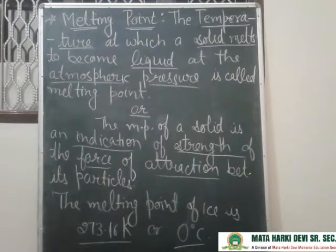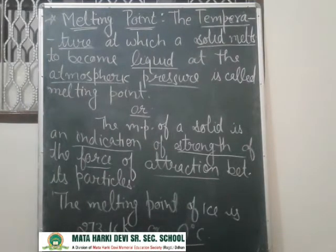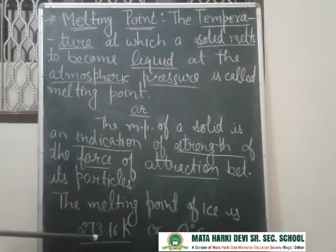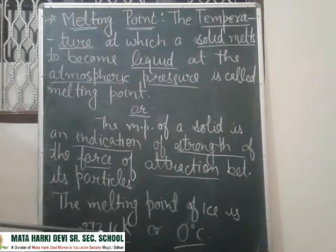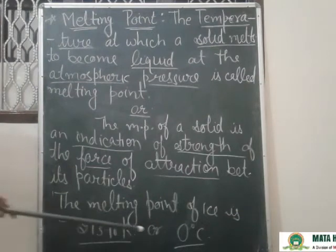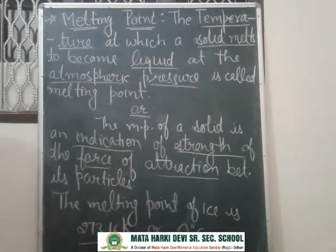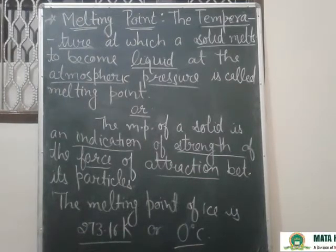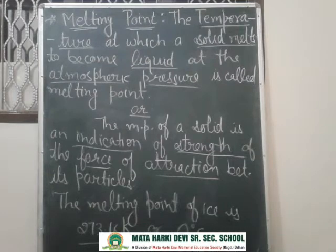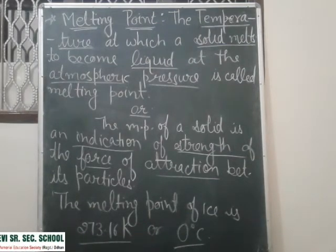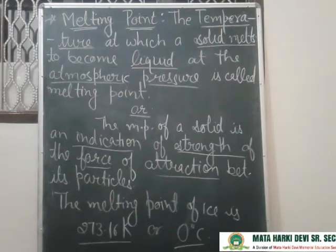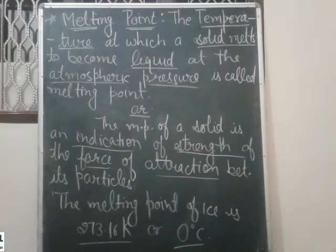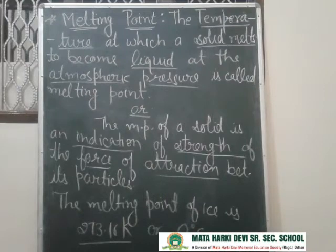जैसे मान लीजिए आपने ice ली, तो ice को आपने heat provide की। Heat provide करने के बाद वो liquid बनना शुरू हो गई — किस temperature पे? 273.16 Kelvin, और degree Celsius में बात करें तो 0 degree Celsius। तो ice solid से liquid में change होना शुरू हो गई। उस temperature पे उसके particles की force of attraction between the particles टूटने लग जाती है।